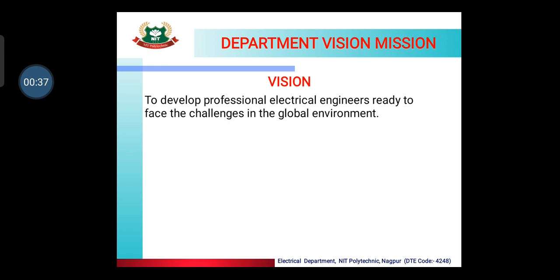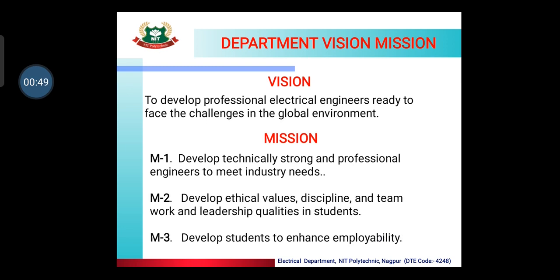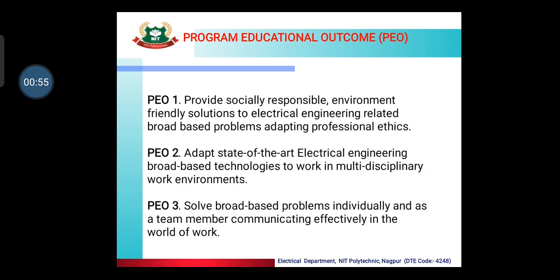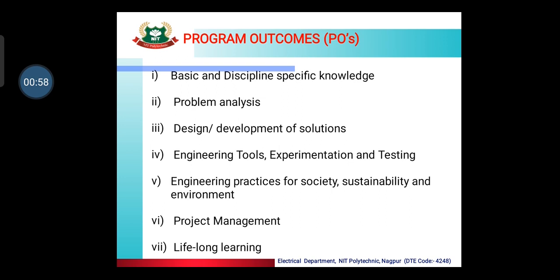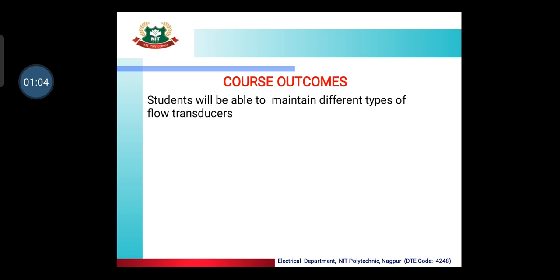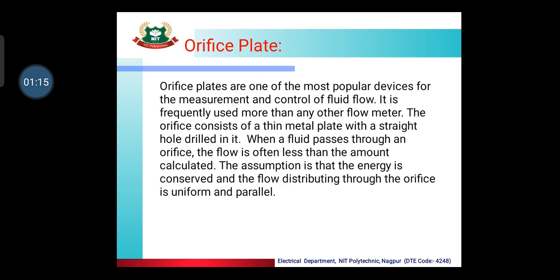Our Electrical Engineering Department vision is to develop professional electrical engineers ready to face challenges in the global environment. On the basis of that vision there are three different missions of the Electrical Engineering Department. There are three program educational outcomes: PO1, PO2, and PO3, and on the basis of that there are seven program outcomes. Our course outcomes are: student will be able to maintain different types of flow transducers. Learning outcomes are: student will be able to maintain different types of transducers used for measurement of various parameters.